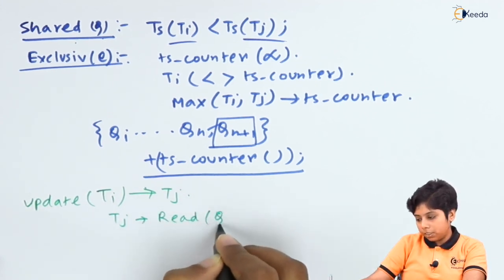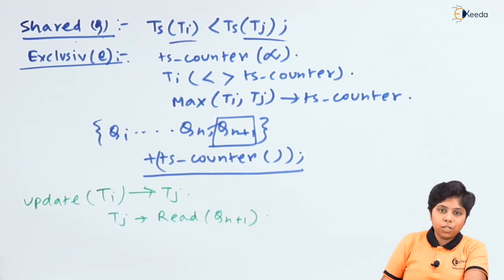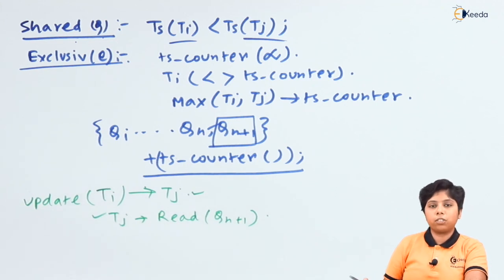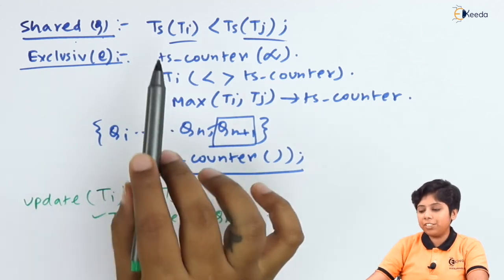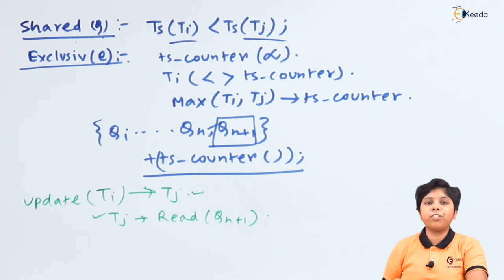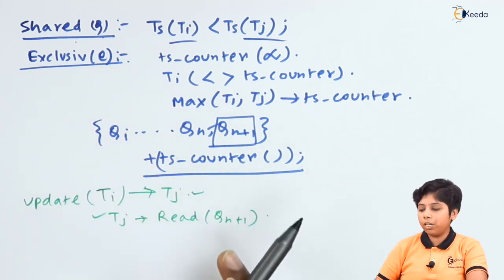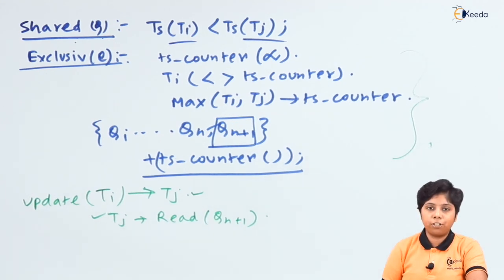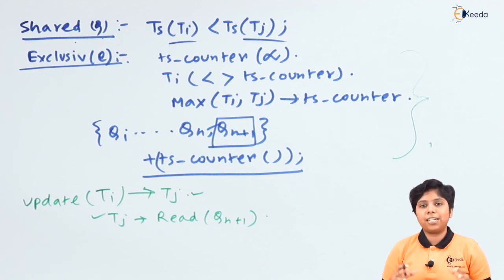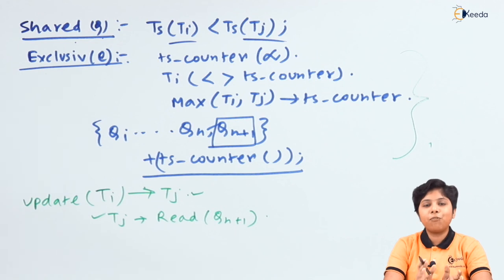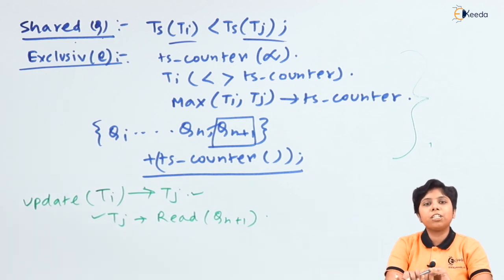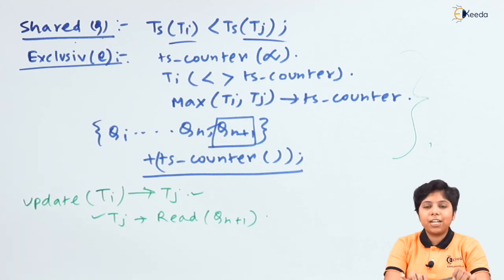So Q_i to Q_n will have Q_{n+1} as one extra value created by the write operation, with the W-timestamp updated to the incremented ts_counter. When T_j wants to perform a read, it can see the update by T_i and can perform a read on version Q_{n+1}. T_j and T_i never wait for read locks, meaning the shared lock condition where TST_i is less than TST_j can be performed without locks. This two-phase locking protocol combined with multi-version schemes assures deadlock-free, conflict-serializable, view-serializable, and cascadeless schedules.